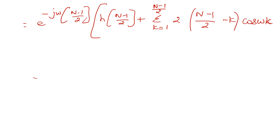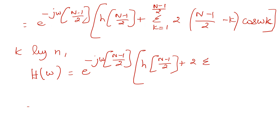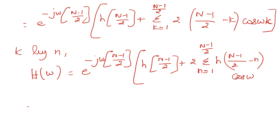Since k takes the value of (N-1)/2 minus n, I am now replacing k by n. So we get H(ω) equal to e^(-jω(N-1)/2) into h((N-1)/2) plus 2 times, taking the factor out as constant, summation n equal to 1 to (N-1)/2 of h((N-1)/2 - n) times cos(ωn). In the place of k I have substituted n.